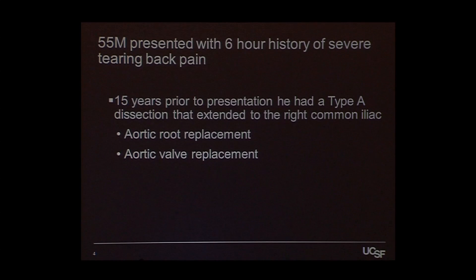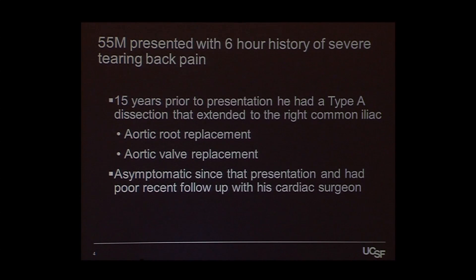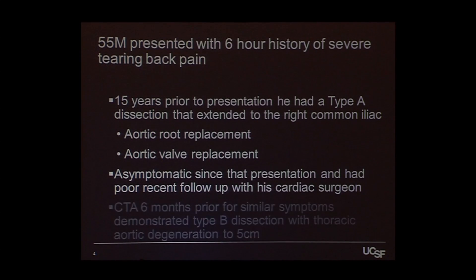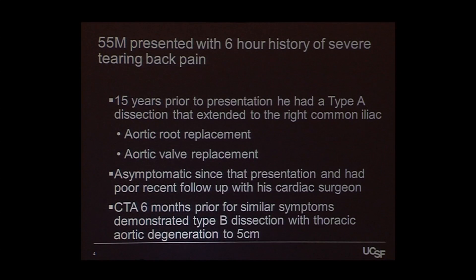A 55-year-old gentleman presents with a six-hour history of severe tearing back pain. Fifteen years prior to this presentation, he had a type A dissection that extended to the right common iliac artery. He had his aortic root replaced and an aortic valve replacement. He's been asymptomatic since that repair with no follow-up with his cardiac surgeon. Six months prior to this presentation, he had similar symptoms, a CT scan was performed, and it demonstrated a type B dissection — the arch had healed — and aortic degeneration to five centimeters.